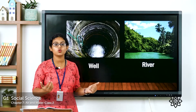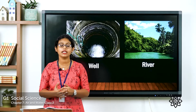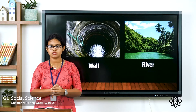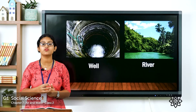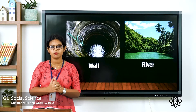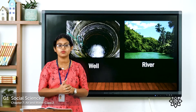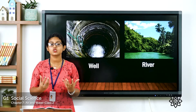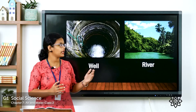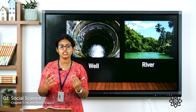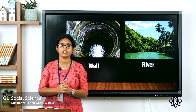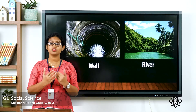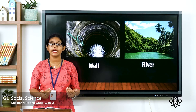What about a well? Most of us have a well in our home. We take water from the well for our day-to-day purposes. We can also get water from underground by digging a well. So a well is also a source of water. What about a river? A river is a water body that flows to the sea. These are some of the sources from which we get water.